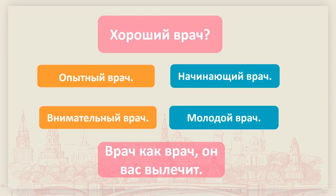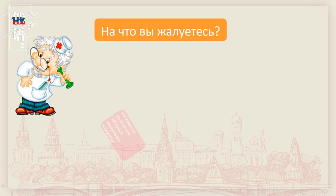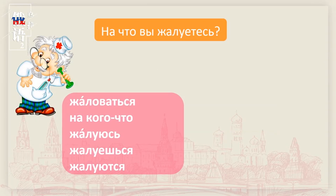这个句型很特别，医生就是医生，俄语中间加一个как：врач как врач。我们也说老师就是老师：преподаватель как преподаватель。还可以加其他职业词，用这个句型来造句。下面，刚才出现了жаловаться这个动词，因为它是-овать结尾的，变位特殊，变位形式为-ую，-уешь，-уют。